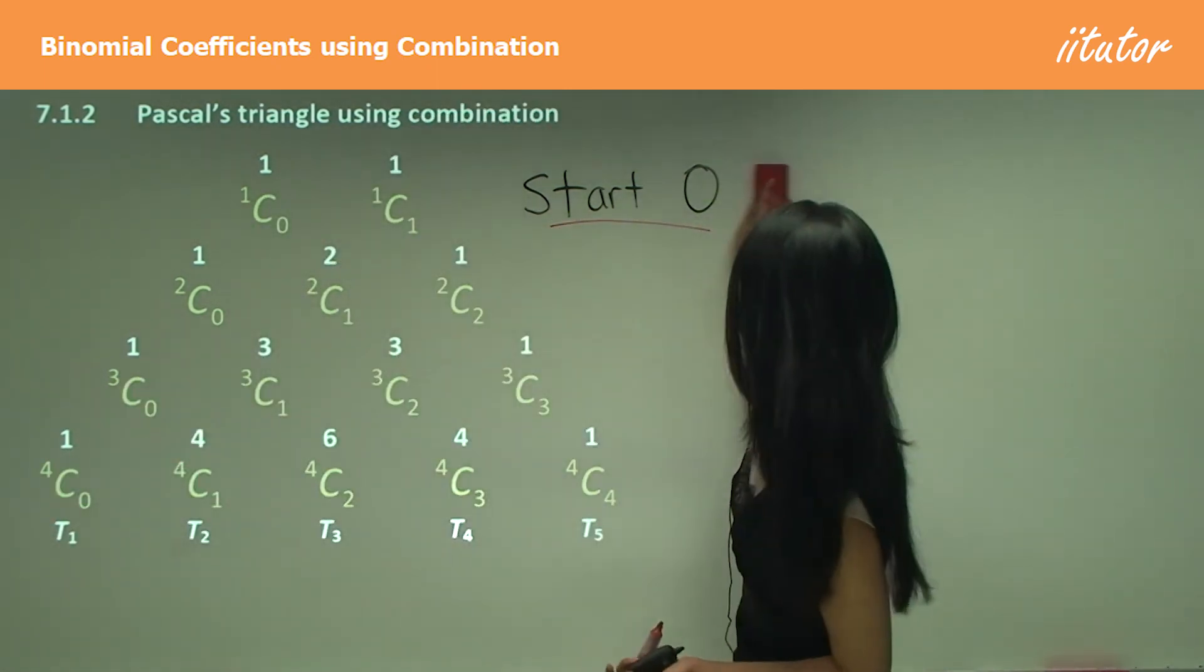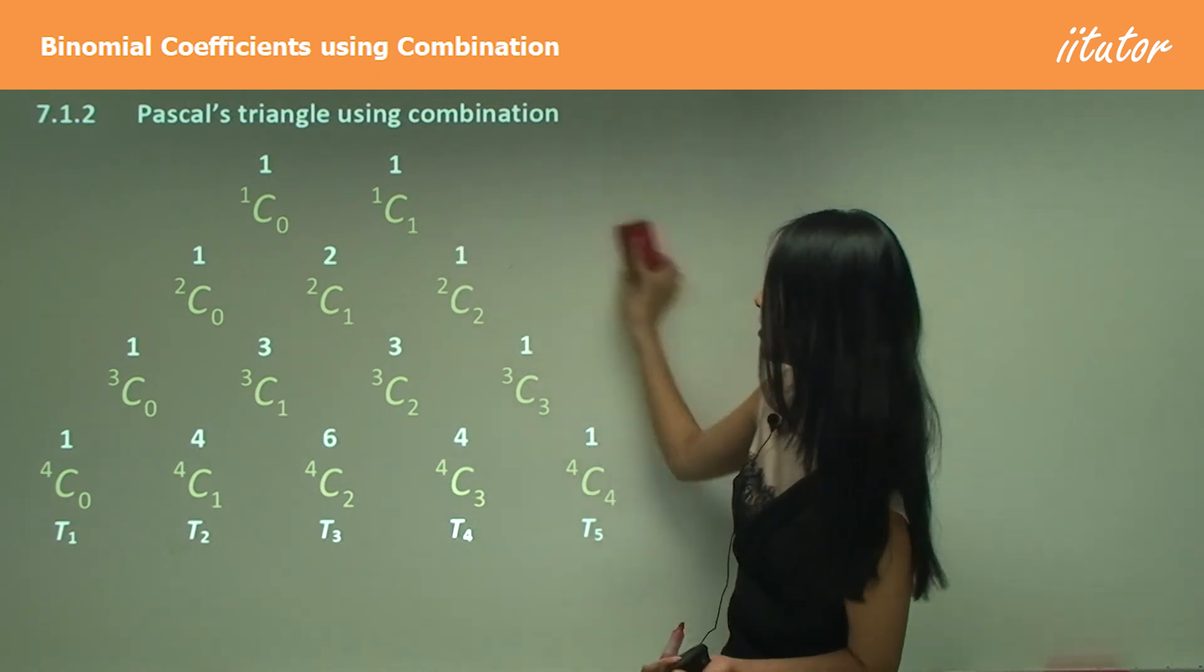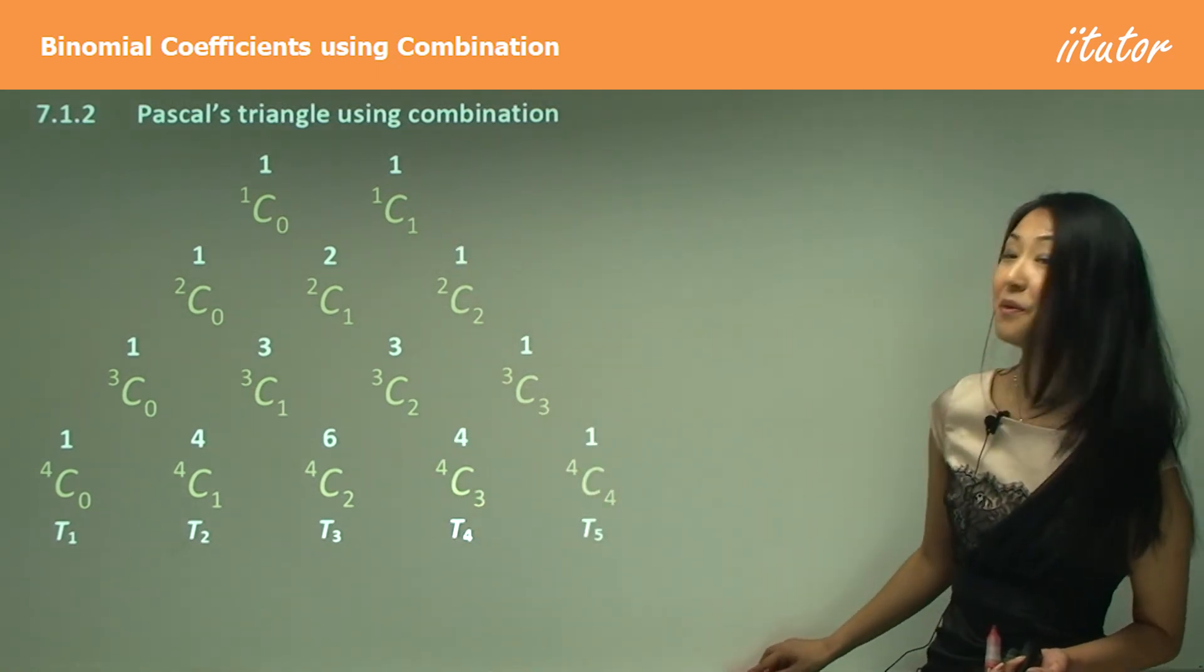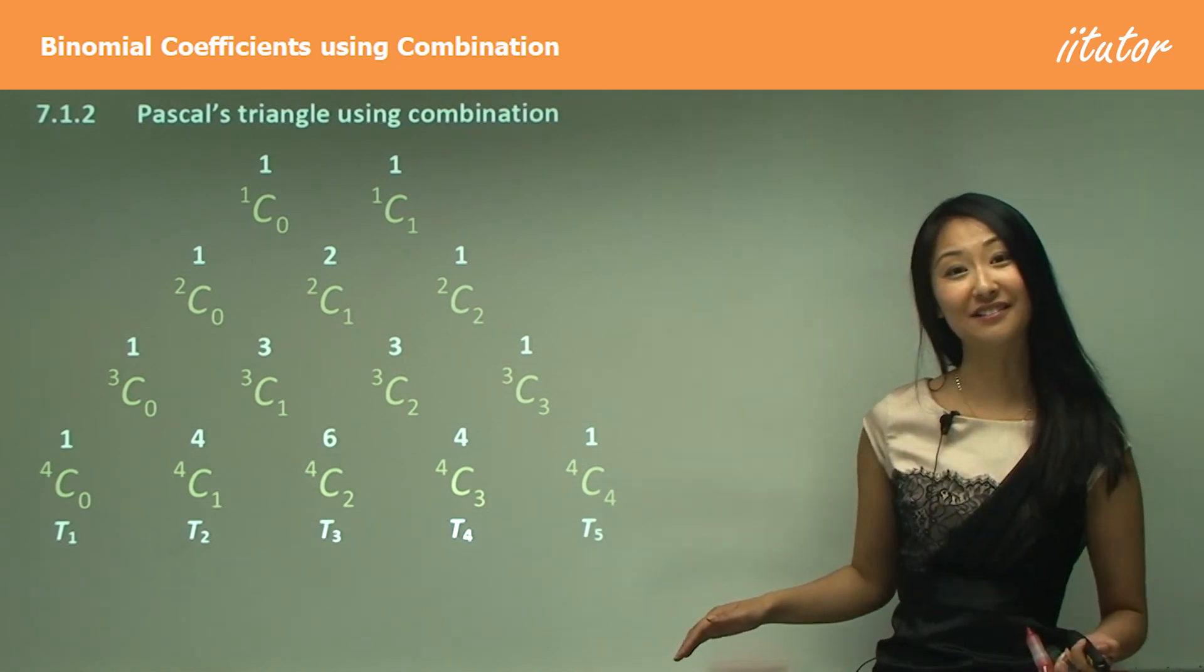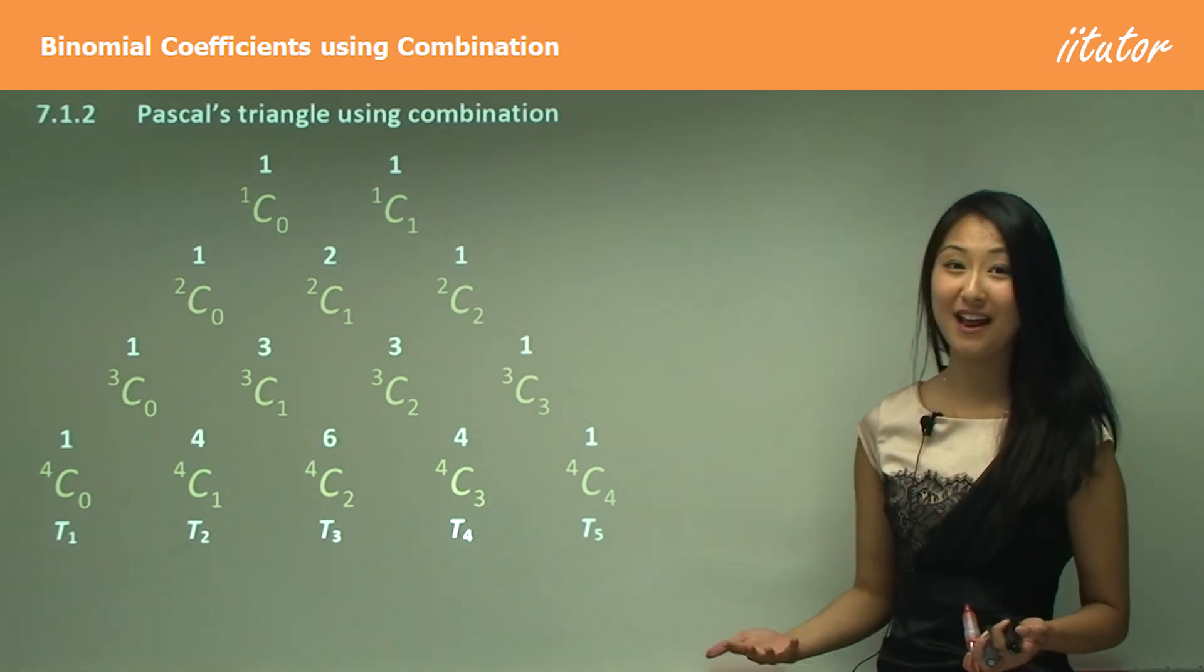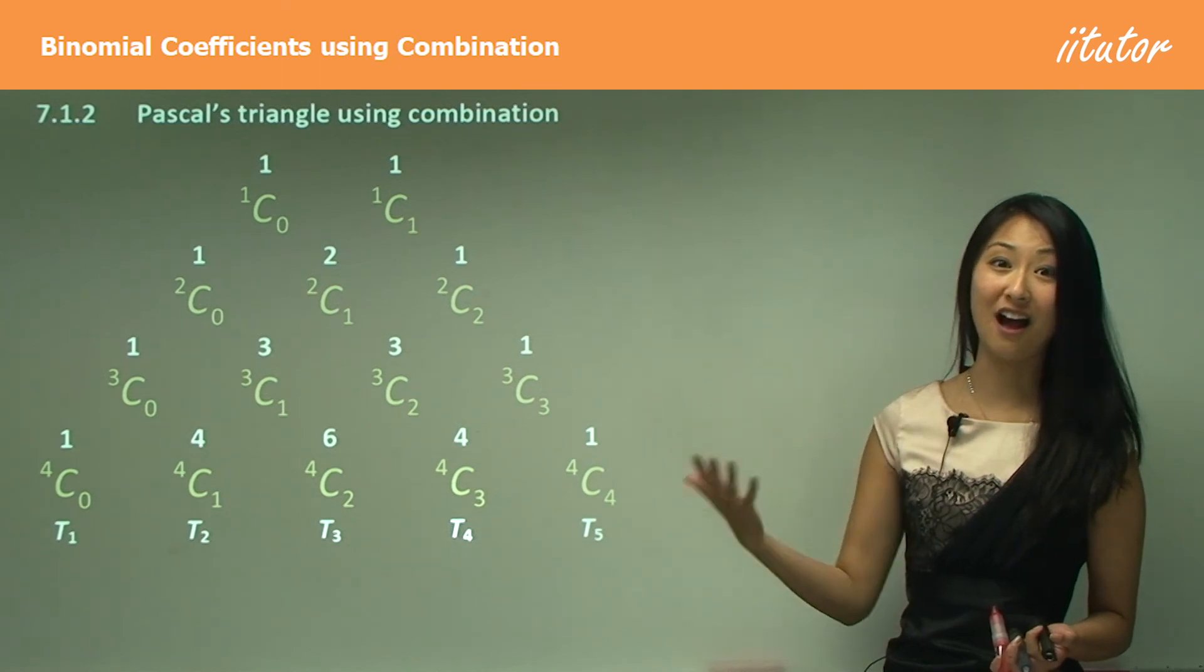All right, great. So now we know how to use combinations to work out the Pascal's triangle numbers without actually drawing out the triangle. And that saves us a lot of time and effort when we have something to a very high index.